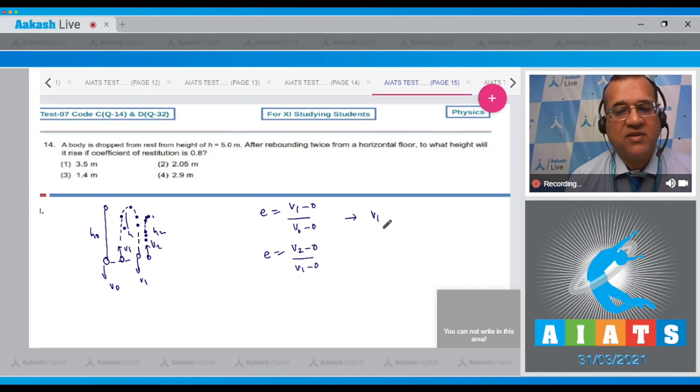So here v₁ equals e into v₀, and this v₂ equals e into v₁. And fill this, this becomes e² into v₀.